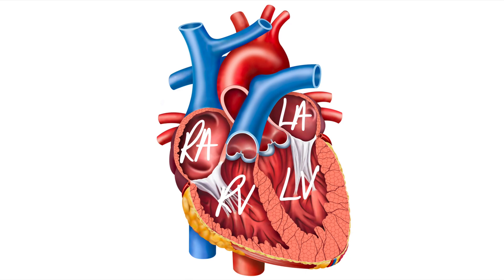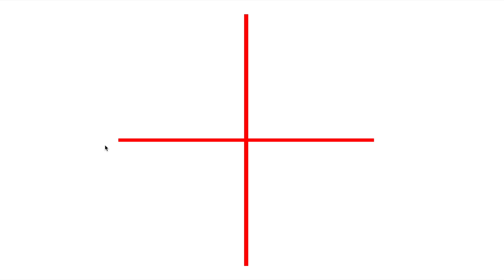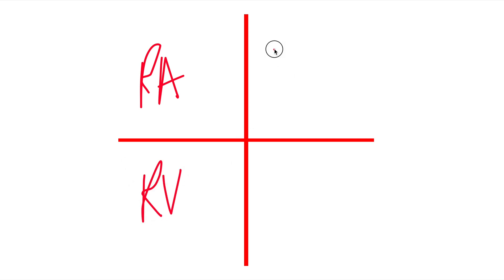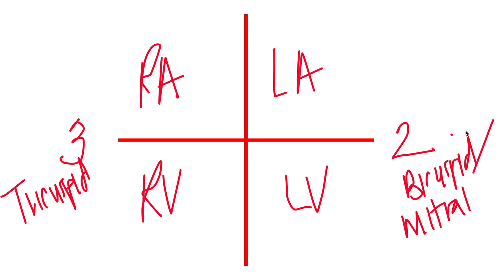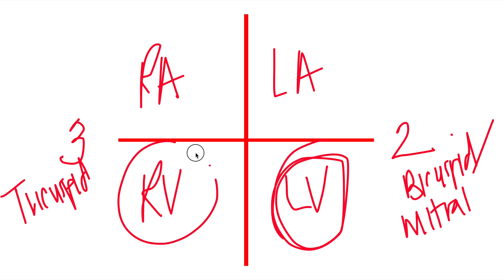The cycle is going to continue. Let me show you an easy way to memorize where the tricuspid and bicuspid valves are. You can draw a little cross and write right atrium, right ventricle, left atrium, left ventricle — then put a three here and a two here. The three means tricuspid, and the two means bicuspid. Remember that the left ventricle is responsible for pumping blood through the rest of the body, and the right ventricle is going to pump blood to the lungs. Make sure you memorize: right ventricle pumps blood to the lungs; left ventricle pumps blood through the rest of the body.